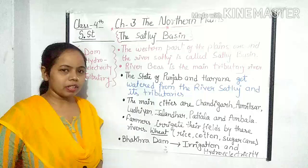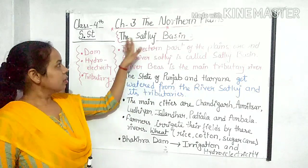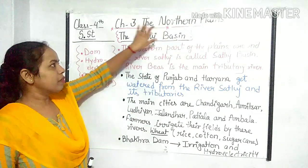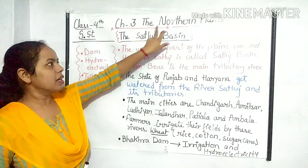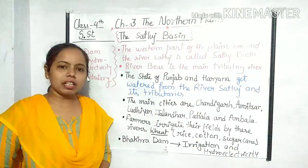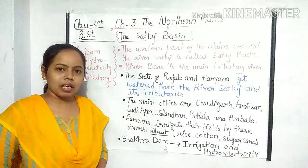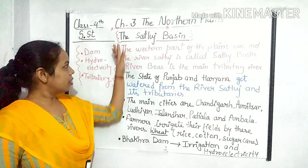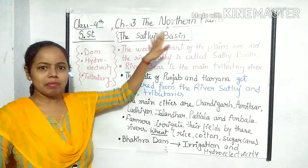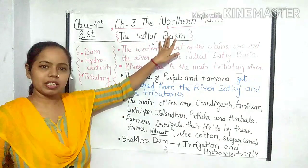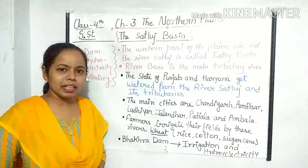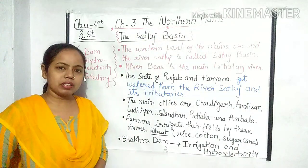Let's start with the Satluj Basin. As you all know, the name of our chapter is The Northern Plain. Northern Plain ka matlab hai uttar ka maidan. Aaj hum padhenge The Satluj Basin. Satluj river ka naam hai, Basin ghaati. Toh Satluj ghaati ke baare mein aaj hum padhenge. So let's start.